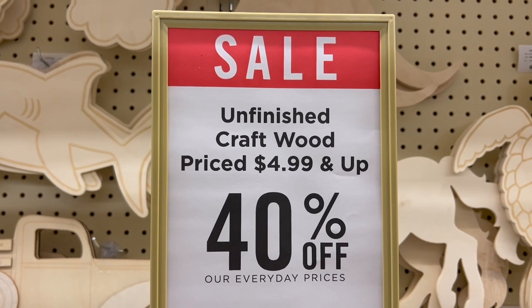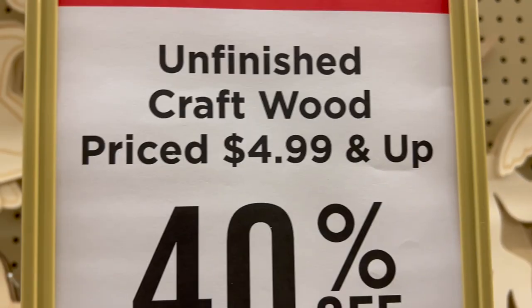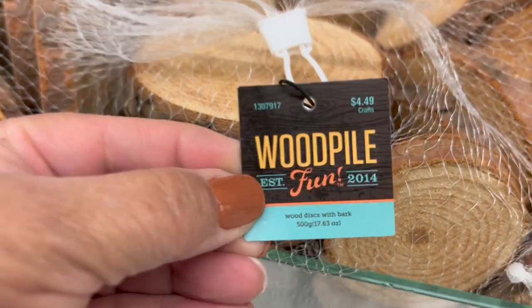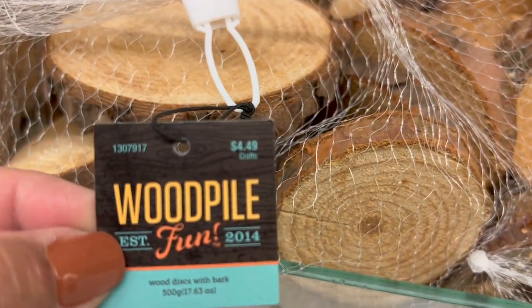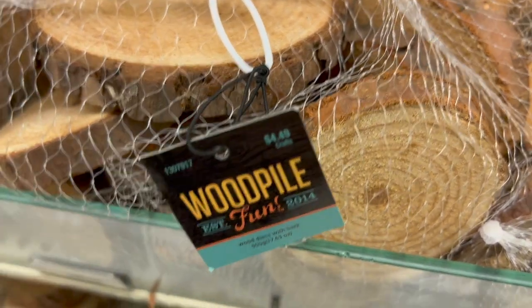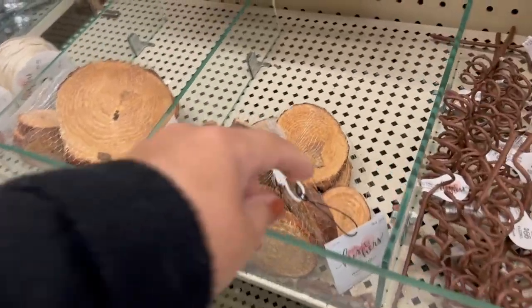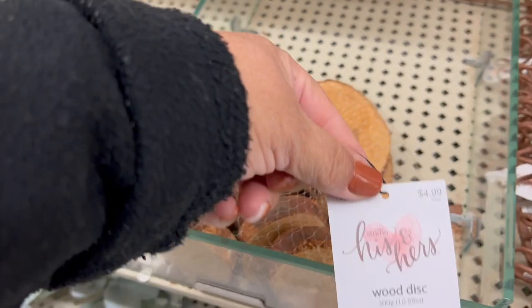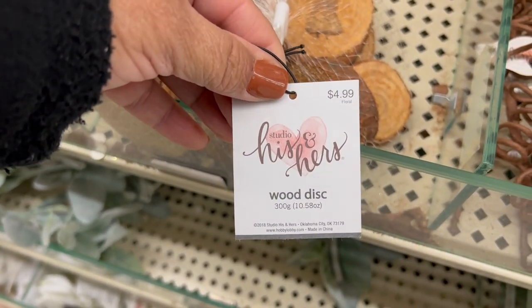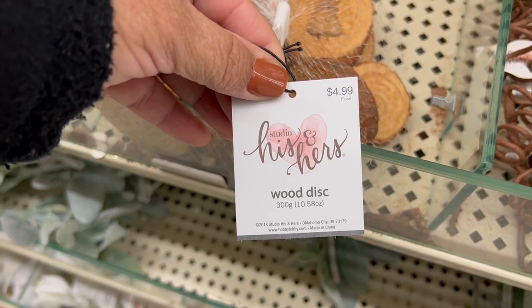And I mentioned this in my last video, but you can get wood slices at Hobby Lobby. But make sure to watch the prices. In the wood paw section, the items have to be $4.99 and up to be 40% off. So these wood slices wouldn't be on sale. But you can go to the his and her section, aka the wedding section, and basically get the same thing for 40% off every other week. Now they used to do 50%, but I don't know, they changed that up.